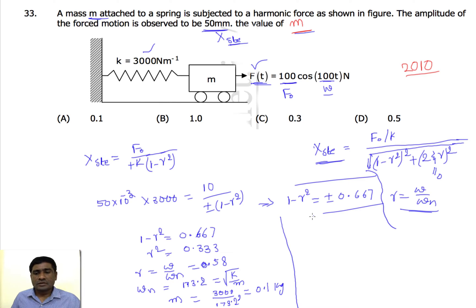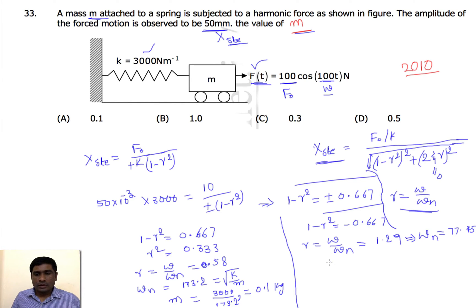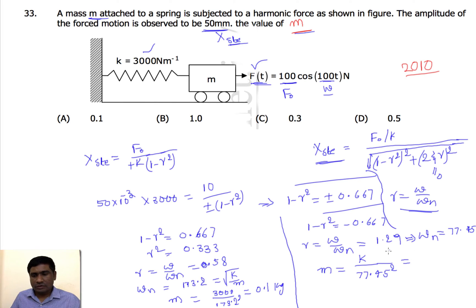For the negative case: 1 − r² = −0.667, so r = ω/ωₙ = 1.29. With ω = 100 rad/s, ωₙ = 100 / 1.29 ≈ 77.5 rad/s. Then m = k / ωₙ² = 3000 / 77.5² ≈ 0.25 kg. There are two possibilities, and the answers are A and D.